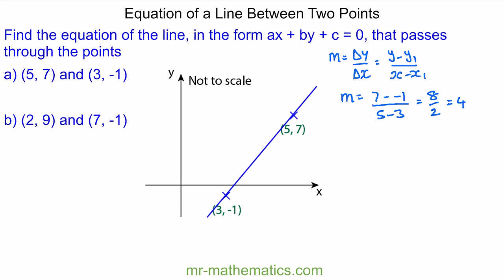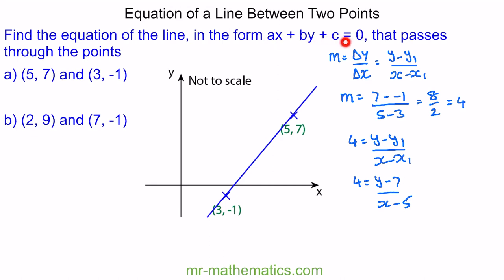Now we have our gradient, we can substitute it back into our initial equation: 4 is equal to y minus y1 over x minus x1. Now we need to choose a coordinate pair — I'm going to choose (5, 7) because it has positive values. So 4 is equal to y minus 7 divided by x minus 5. I'm going to rearrange this equation, so 4 lots of x minus 5 is equal to y minus 7.